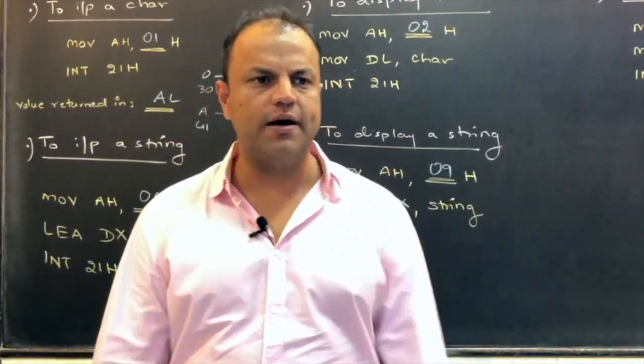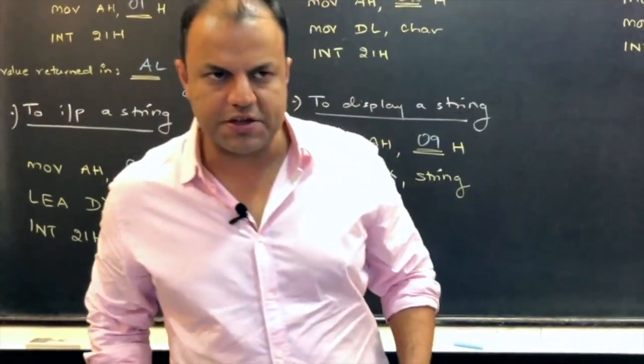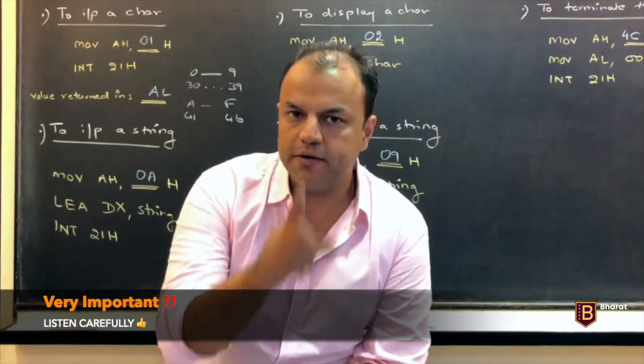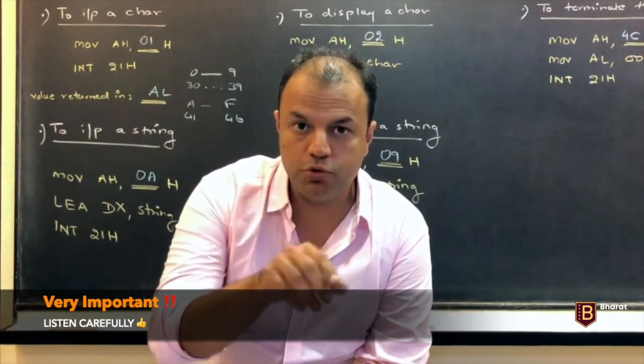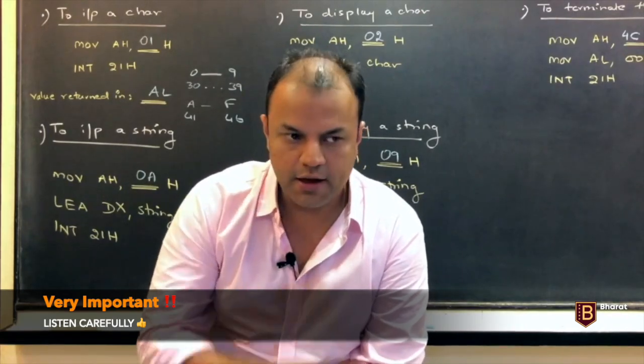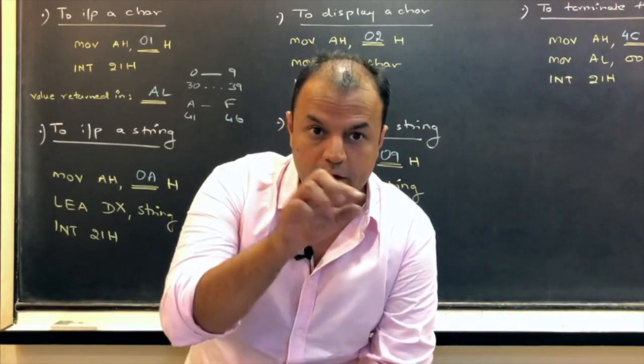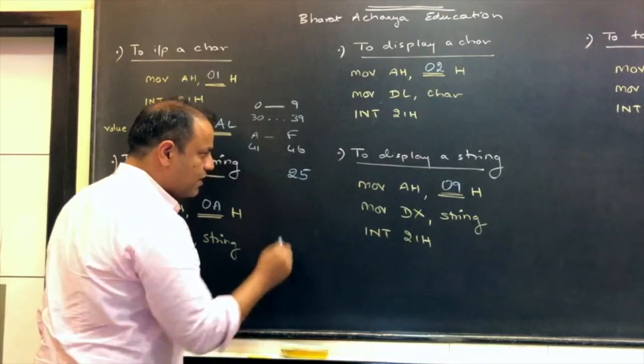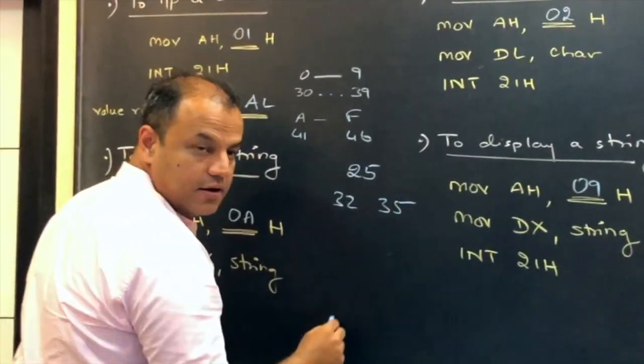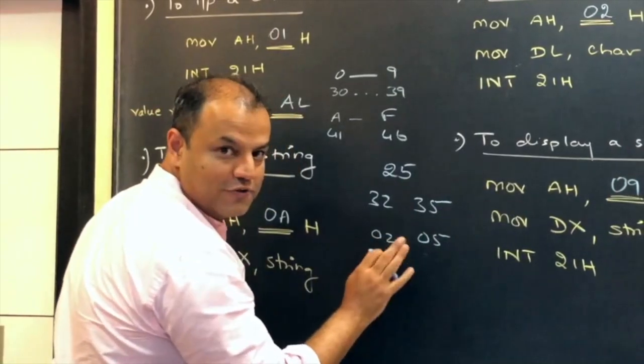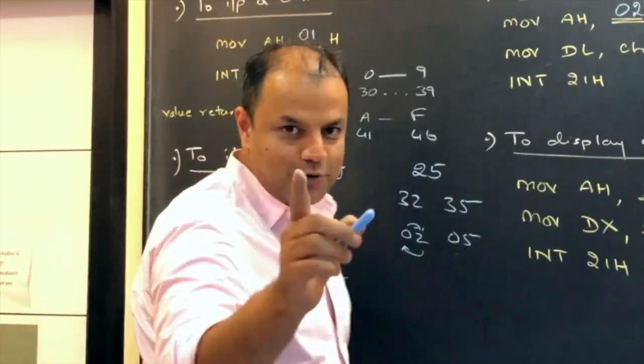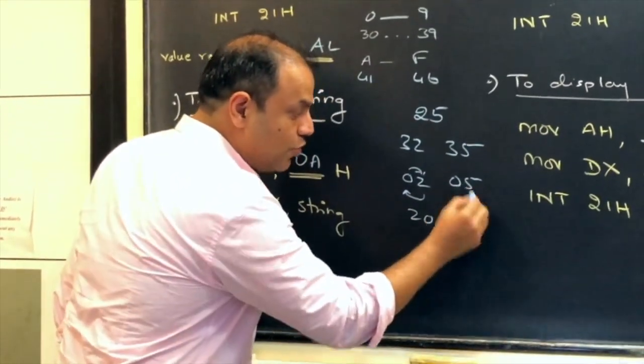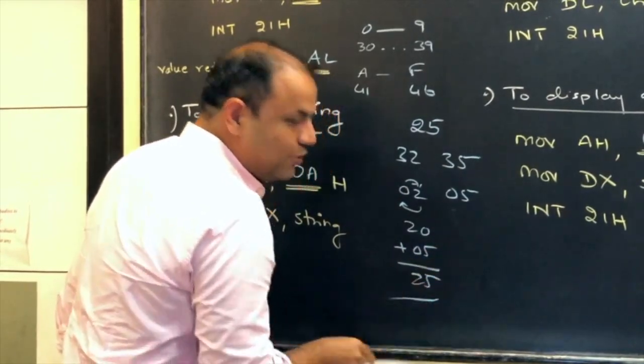Suppose you want to write a program to add two numbers. Two 8-bit numbers. Take inputs from the user. So, the first 8-bit number, let's say the user enters is 25. What are you going to get? You're not going to get 25. For 2, you'll get 32. For 5, you'll get 35. From both, you'll subtract 30. So, what are you going to get? 02 and 05. Listen very carefully. User has entered 25. What you have got is 32 and 35. Subtract 30 from both, you'll get 02 and 05. You're still not done. Rotate this number 4 times. When you rotate an 8-bit number 4 times, the lower nibble and higher nibble gets interchanged. So, this will become 20. To that, you add the number 5. That's when you'll get 25.